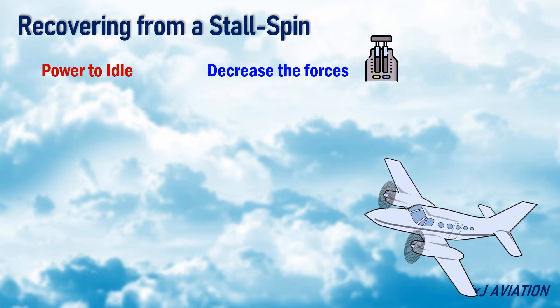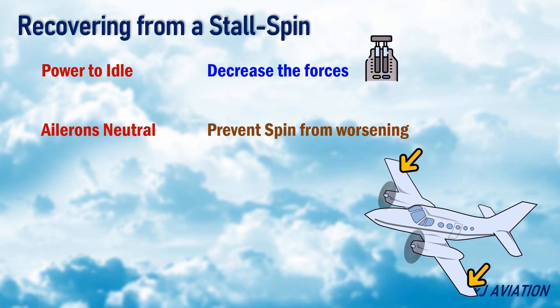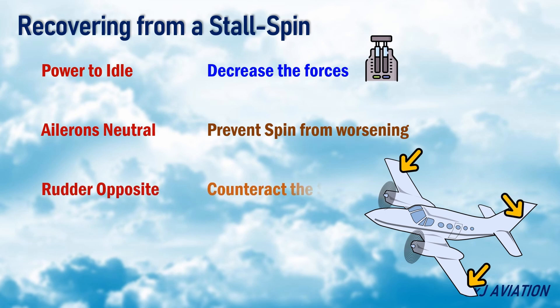Ailerons neutral — this is done to prevent the spin from worsening. Rudder opposite — apply rudder in the opposite direction of the spin to counteract the spin.